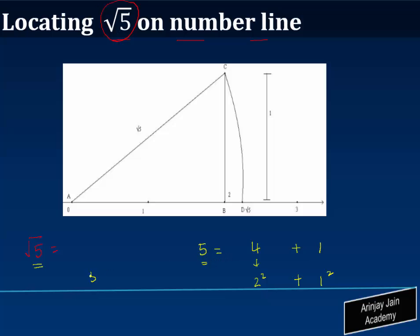write 5 as 5 is equal to 2 square plus 1 square. So what we need to do here is we formulate a point at the origin called point A, and from point A we will take a distance of 2 units to reach point B. So the distance between A B is 2 units.